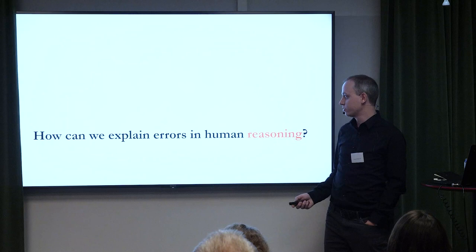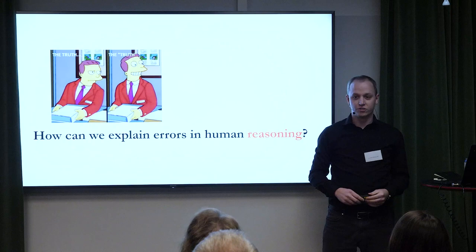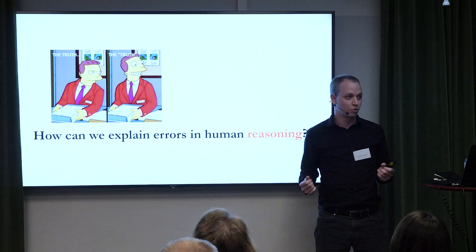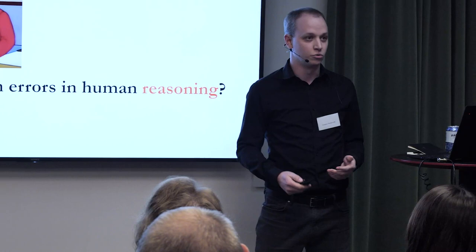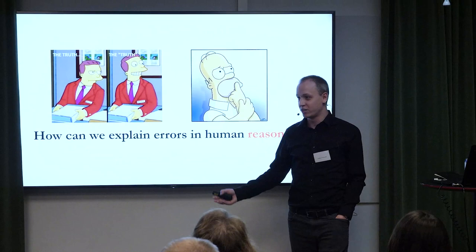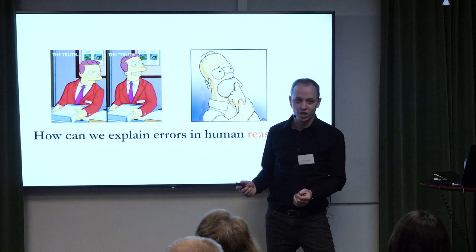The good lawyer account is pretty simple. Lawyers have a conclusion and they need to form the evidence around that conclusion. Under the good lawyer account, people reason like lawyers — we try to form the evidence around a conclusion, and errors emerge because we're too good at it. We're basically deluding ourselves, convincing ourselves that the things we want to be true are true using our reasoning. The other account is that we reason like philosophers: we care about the truth, but we're not very good at figuring it out. We make mistakes, take shortcuts and heuristics — we're bad philosophers.